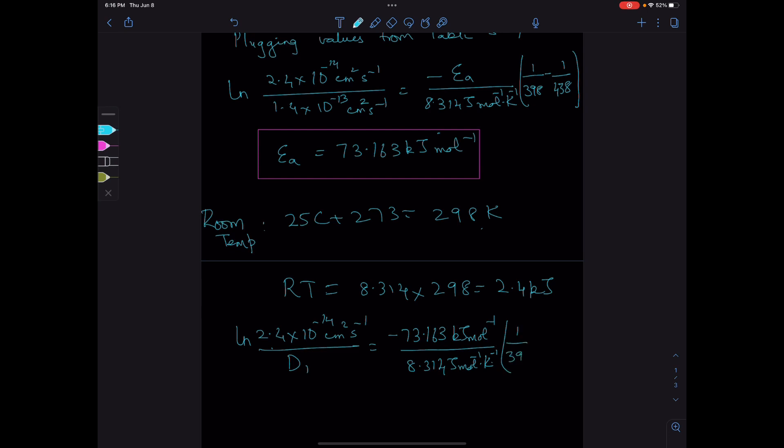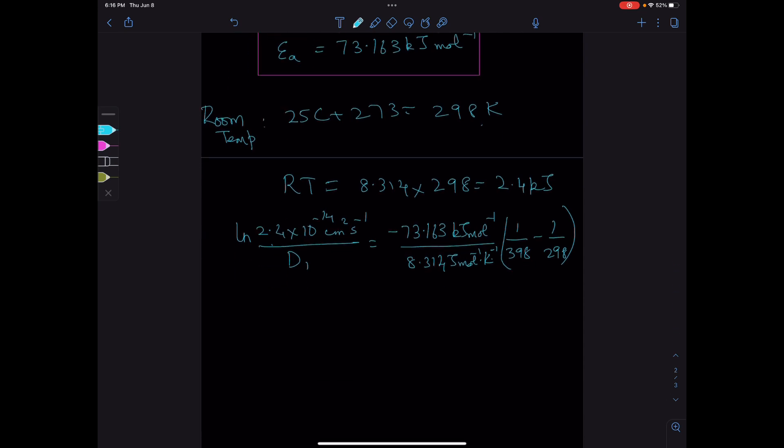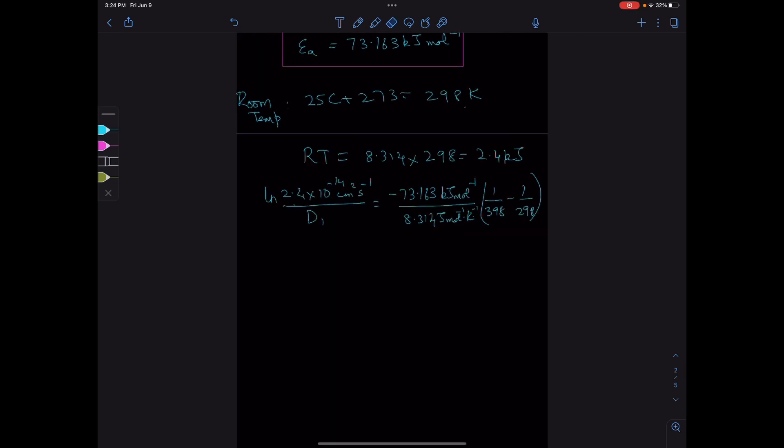Times (1/398 - 1/298). This gives D1 = 8.73 × 10^-18 cm²/s at room temperature.